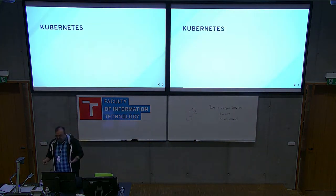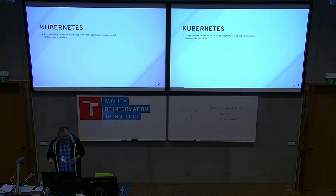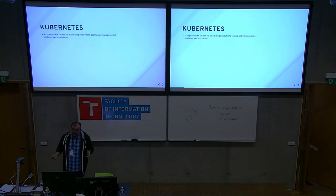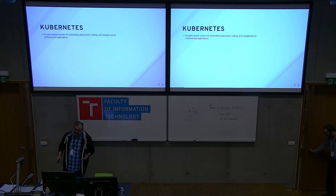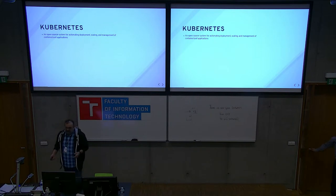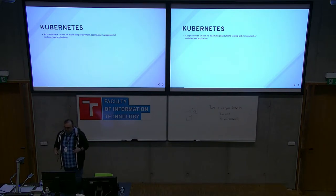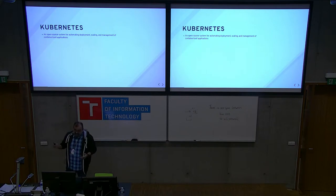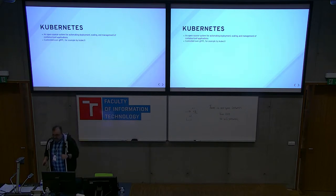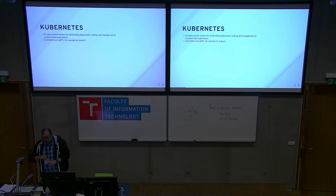The first player in all this is Kubernetes. It's officially listed on its website as an open source system for automating deployment, scaling, and management of containerized applications. In short form, people call that orchestrating containers or a cluster — and probably more things than containers now. It's controlled over gRPC, and that's the important thing as far as this conversation is concerned.